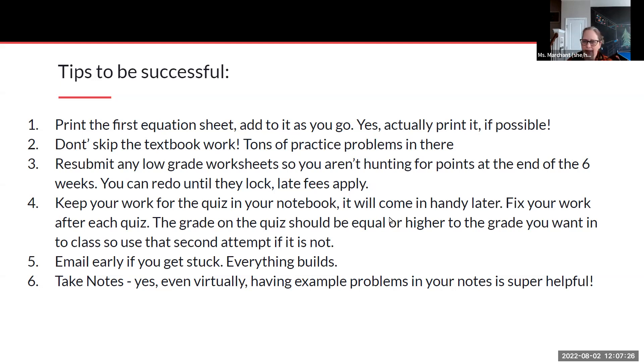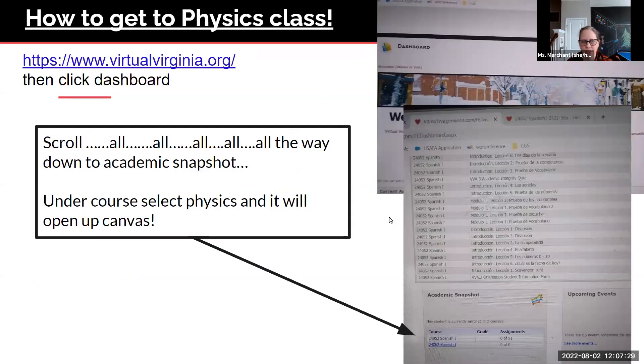So how do we get to physics class? You have to go to www.virtualvirginia.org because that is where your login information is. If you do not have your login information yet, email your counselor right now so that you can get it. Hit pause on the video and do that so you do not forget. When you're at virtualvirginia.org, I think it's on the left side, it'll be something called dashboard. Click the dashboard and then you have to scroll all the way down.